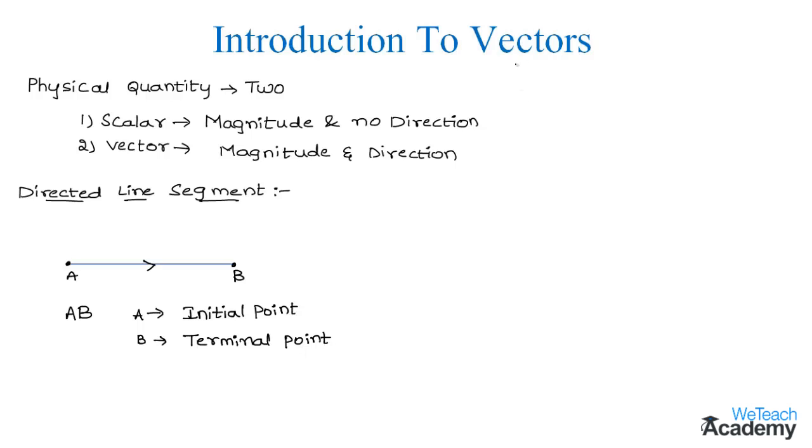Make a note that vectors are represented by thick letters or letters with bar. For example, if A is a vector, then its length is denoted by mod A bar, or simply we can say it as A. Here A is always non-negative. That is, a vector cannot be negative.